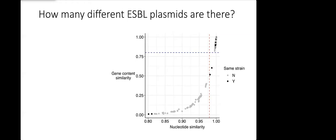You can see that there's a pretty clear break in the distribution. In the top right hand corner we have pairs of plasmids that are sufficiently similar at both the nucleotide and gene content level as to be called the same. When we applied these cutoffs we found that we had 12 distinct Klebsiella plasmids across our ESBL collection.